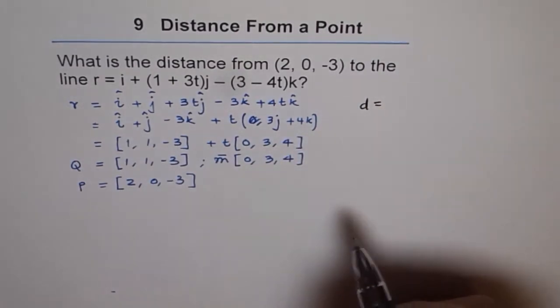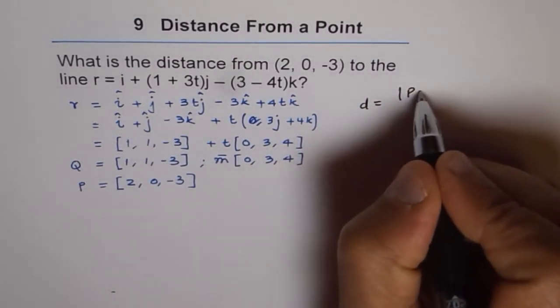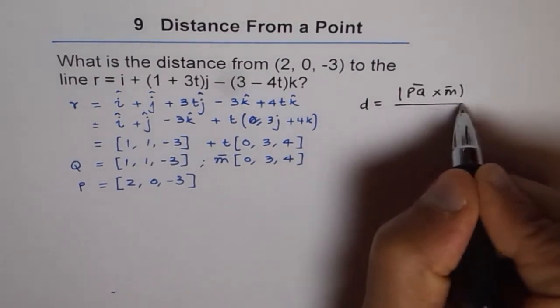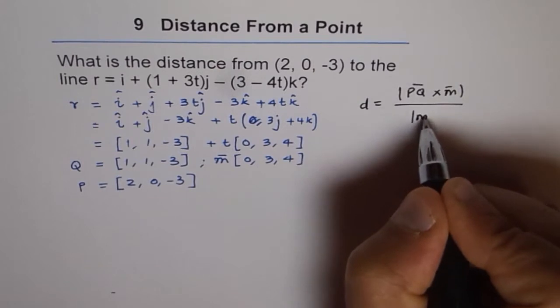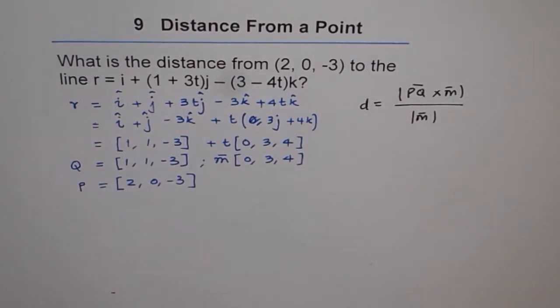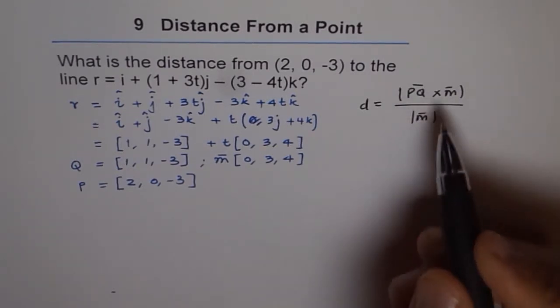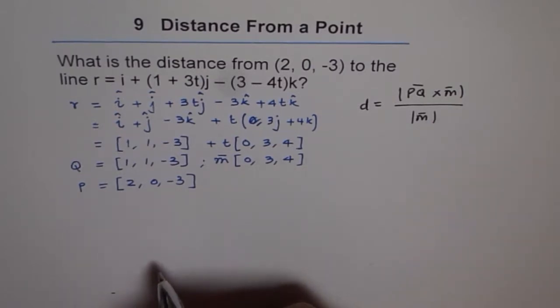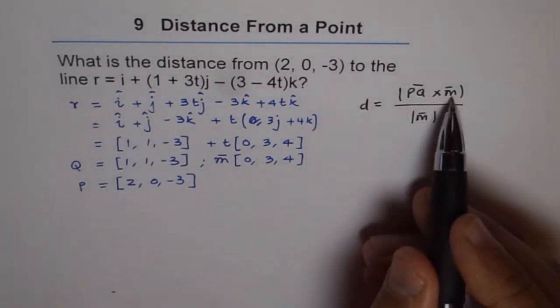So we can write the formula first here. So the formula is magnitude of PQ cross m, divided by the magnitude of m, because we just need a unit vector in the direction normal to the line. That is what we need, unit vector normal to the line. Now PQ cross m,